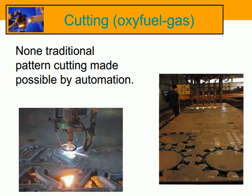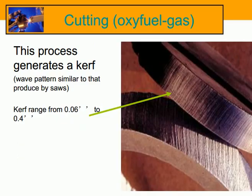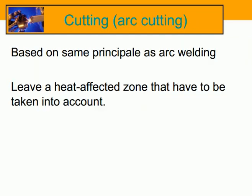Oxyfuel gas cutting generates a curved wave pattern on the cut surface, similar to that produced by saws. The curve range is from 0.06 to 0.4. This is illustrated with a 100mm thick plate example.